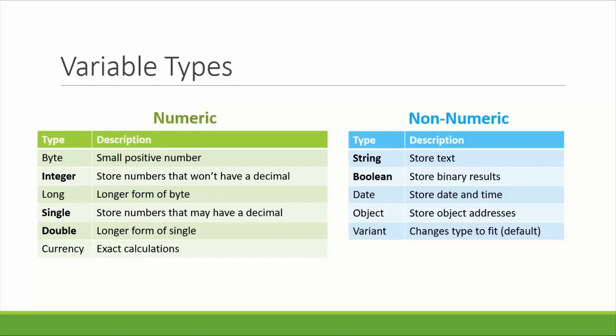Now let's look at the non-numeric types. String and Boolean you will use often. String stores text values, so messages or words that you want to build or display to the user would be String type variables. Boolean stores binary data, so true or false, yes or no, 0 or 1 are all examples of binary data. The Date type can store dates and times, but the formatting is a little strange, so unless you're calculating dates and times, it might be best to store your dates as String variables however you want to format them.